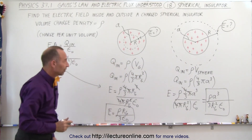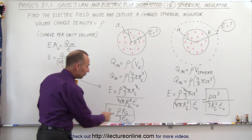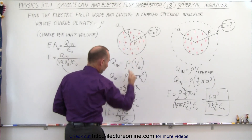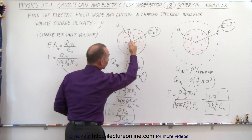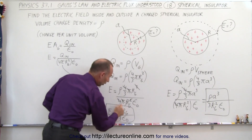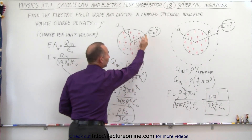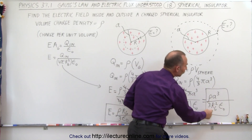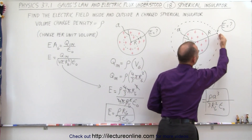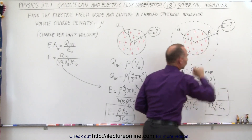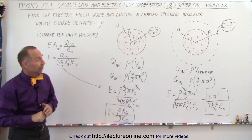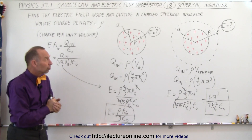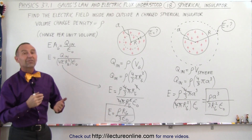This is the electric field outside the sphere and this is the electric field inside the sphere, each as a function of the radius of the Gaussian surface. Notice that the farther out you go — up until you reach the surface — the larger the electric field will be. Beyond the surface, the electric field gets smaller and smaller as r becomes bigger, as you move farther away from the charged object. And that's how you find the electric field strength both inside and outside a charged spherical insulator.